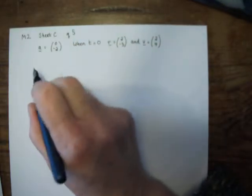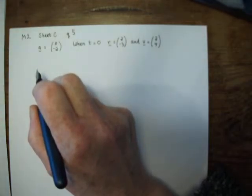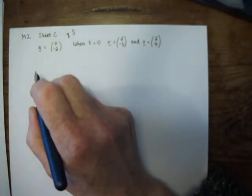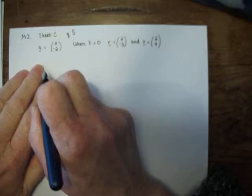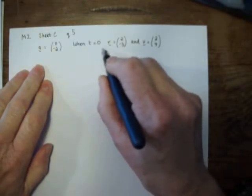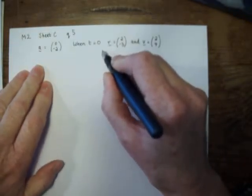In this question, we've been given the acceleration, and we need to find expressions for the velocity and displacement at time t. We've been given these initial conditions. We know what happens when t equals 0.